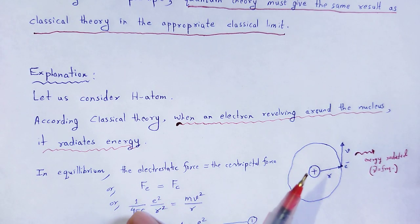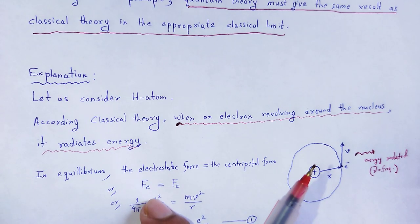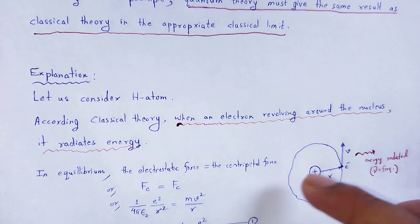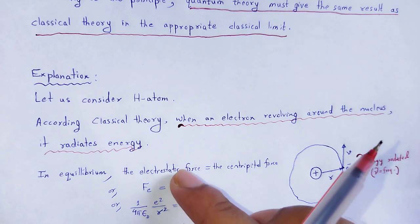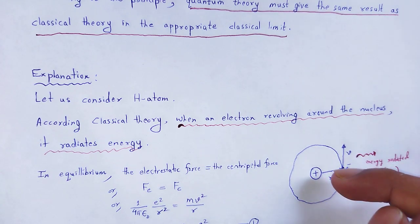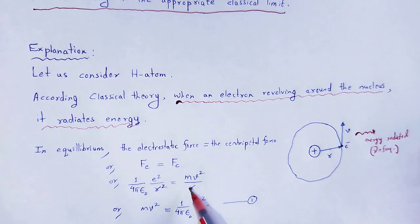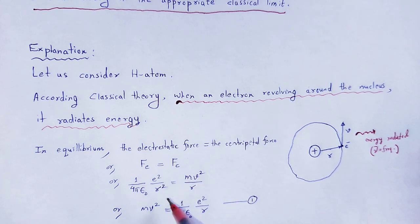The electrostatic force of attraction between the electron and the nucleus: F_E = (1/4πε₀) × e² / R², which is equal to the centripetal force mv²/R. One R cancels out. Therefore, mv² = (1/4πε₀) × e²/R. This is equation number 1.